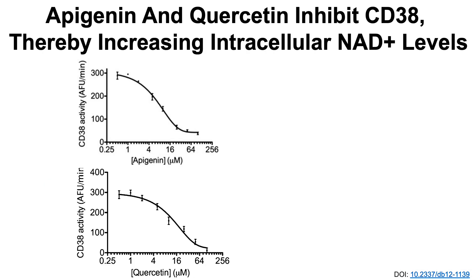Looking at the apigenin and quercetin CD38 data: on the y-axis, CD38 activity is plotted against the concentration of apigenin. As the apigenin concentration increases, intracellular levels of CD38 activity decrease. Similar data is found for quercetin — as the quercetin concentration increases, CD38 activity inside cells also decreases.